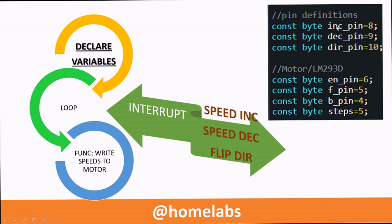As you can see here, we have defined certain constant variables. Pin 8 is configured to watch for interrupts and if this interrupt is triggered, the speed is ramped up. Pin 9 is configured to watch for interrupts and in case a pin change interrupt is triggered on this pin, the speed is decreased.